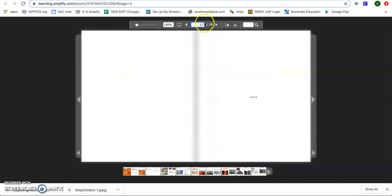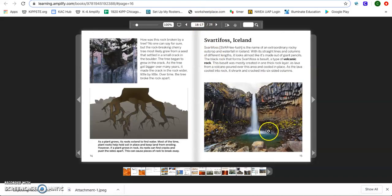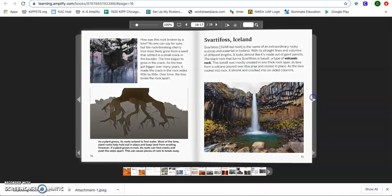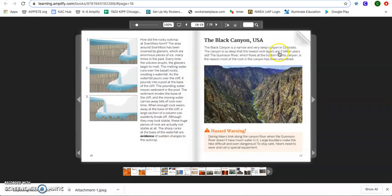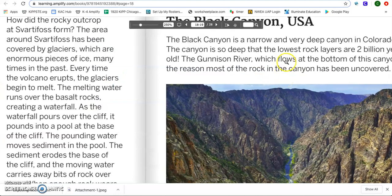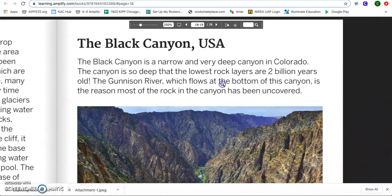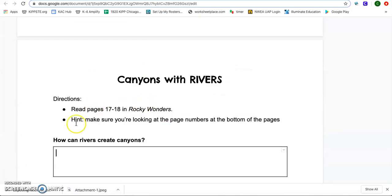Remembering that the page numbers up here may not be the same below. So make sure you are looking at the page numbers at the bottom of the page to get to the correct page number. As we get into the text, the Black Canyon, I want you to remember that you are taking down notes and remembering that this is the question that we are trying to answer: How can rivers create canyons?